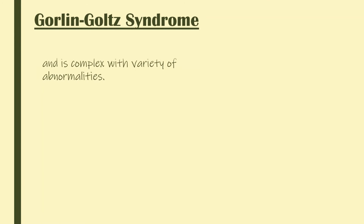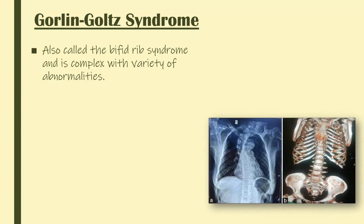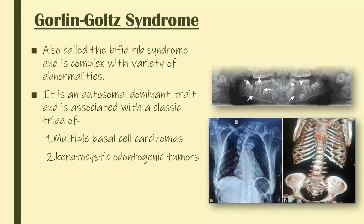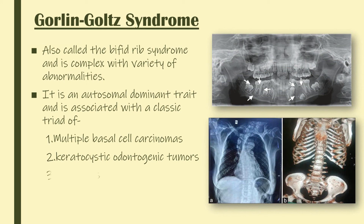The Gorlin-Goltz Syndrome, also called the Bifid Rib Syndrome, presents with a variety of abnormalities. It is an autosomal dominant trait associated with a classic triad of multiple basal cell carcinomas, keratocystic odontogenic tumors, and bifid ribs.